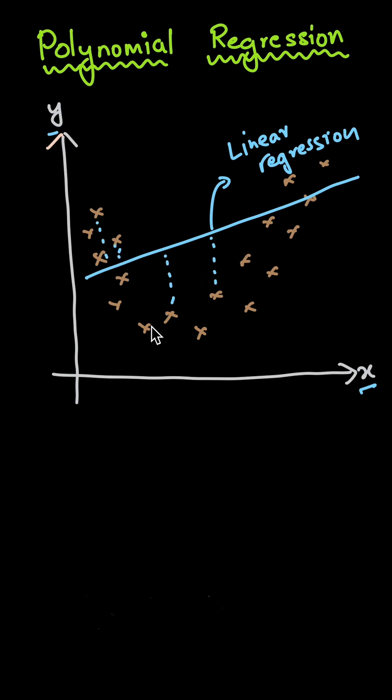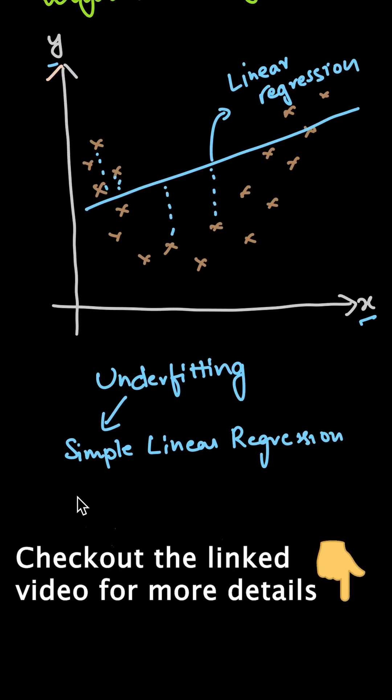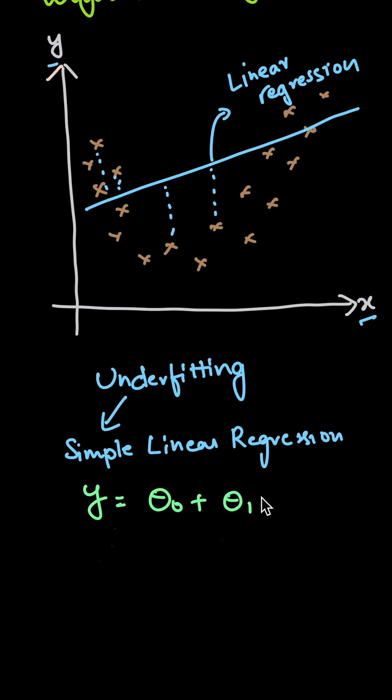That's why we can say that the model we are having right now is underfitting. We are getting this underfitting condition when we are applying simple linear regression. And what is the corresponding hypothesis that we are using? The hypothesis is y equal to theta naught plus theta1 into x.